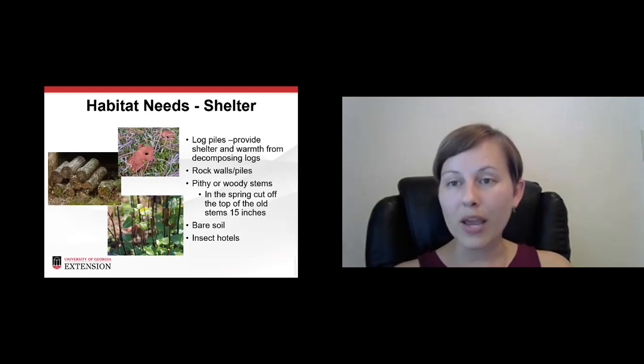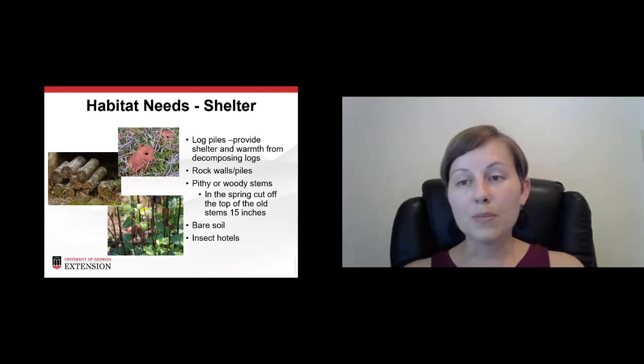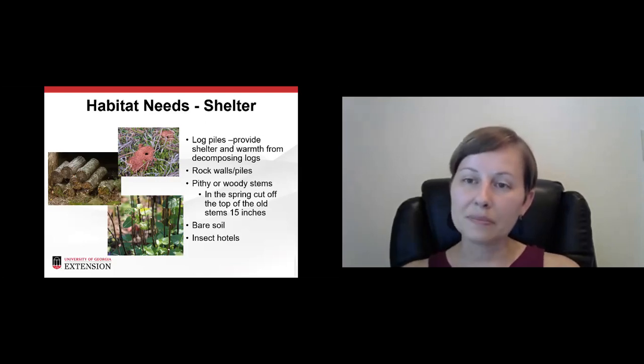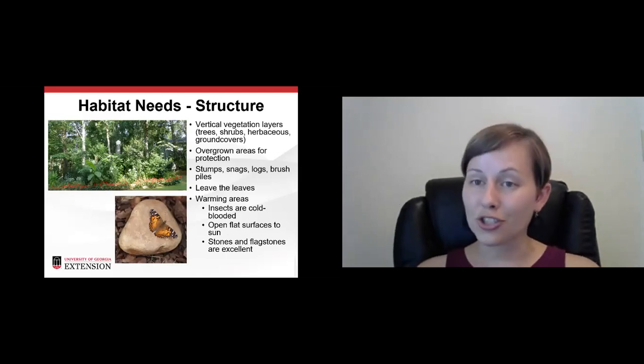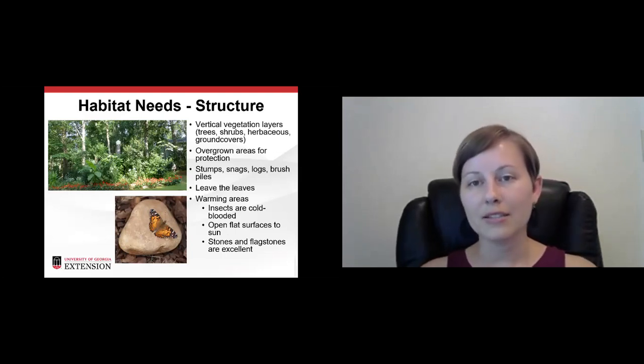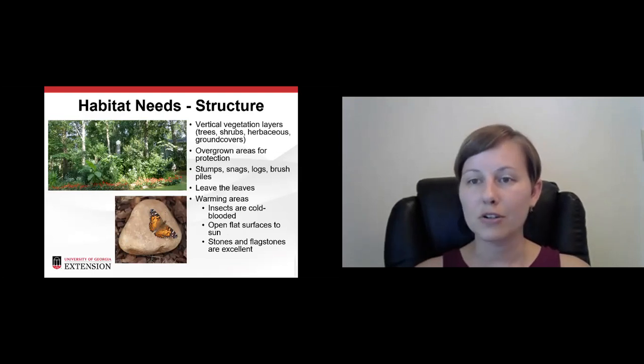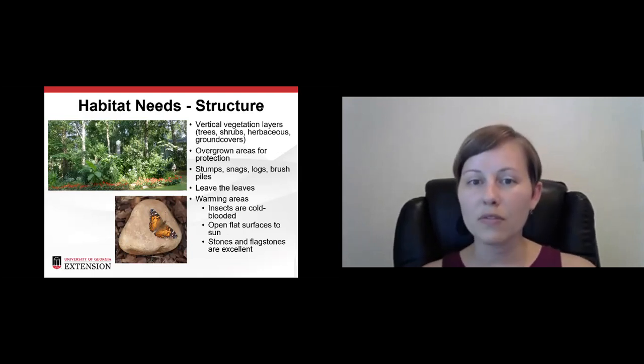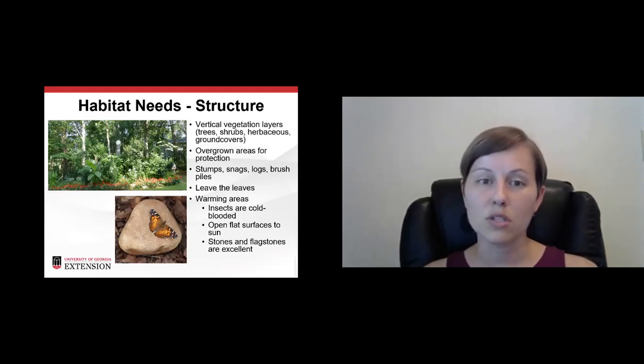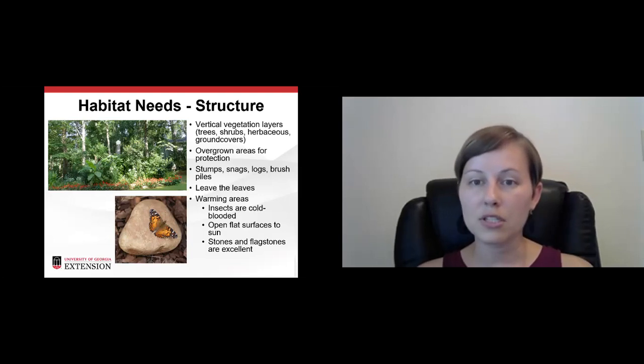So again, that bare soil comes into play. We have a lot of ground nesting bees and other pollinators. You can see some nests up at the top picture there. But having some bare accessible soil is really important for that. So another habitat need is structure. So when we're working on our native landscape, we really want to have vertical vegetation layers. So meaning that everything's not at the same layer, not just ground covers, or not just small herbaceous plants, not just shrubs, but a combination of all those things, trees and shrubs, herbaceous plants, ground cover, because they're each going to offer different habitat and food resources, both to wildlife and to pollinators.